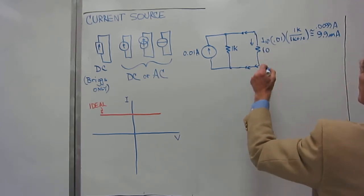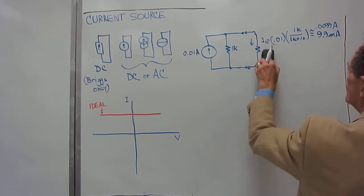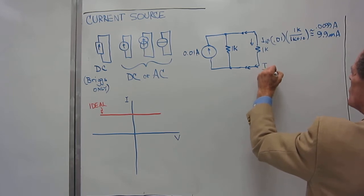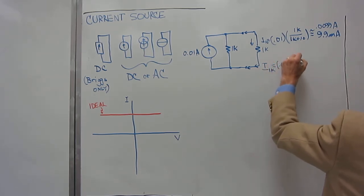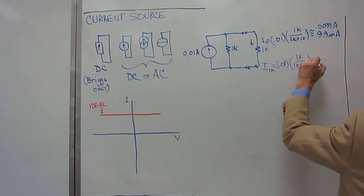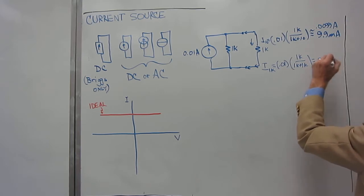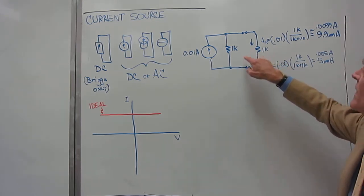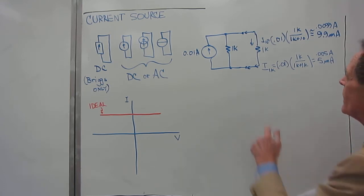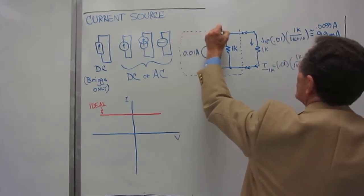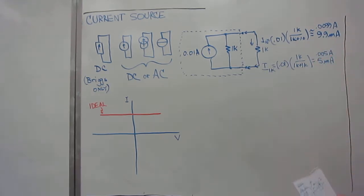Now, let's let this resistor go from 10 ohms to 1K. What is the current? Well, I sub 1K would be 0.01 times 1K over 1K plus 1K, and that equals 5 milliamps or 0.005 amps. So now, half of the current is going through the 1K load on the current source, and the other half is going through this internal amount that is inside the current source, that we have no control over. This is part of the current source itself.